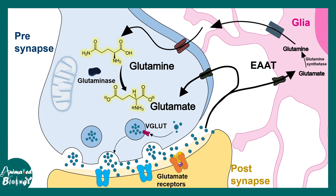This glutamine, as mentioned, can be channeled back into the presynapse where it is utilized to generate glutamate. This is the system by which the synapse efficiently generates glutamate from glutamine — a rapid, time-efficient synthesis. In this way, glia plays an important role in modulating the synapse and the release of neurotransmitter.